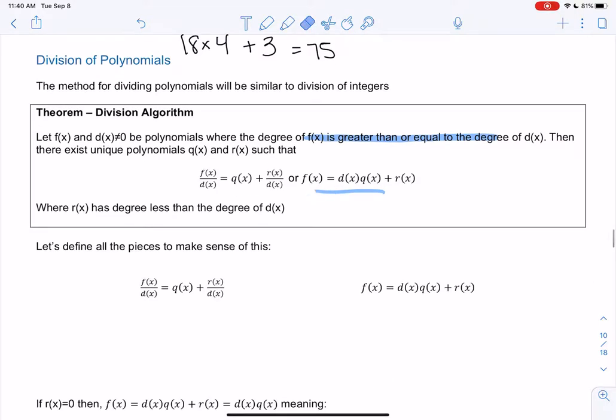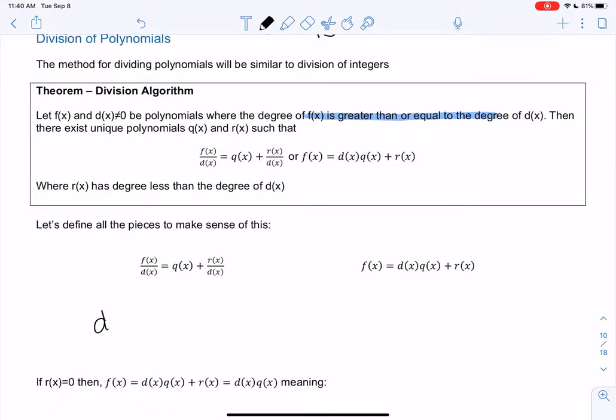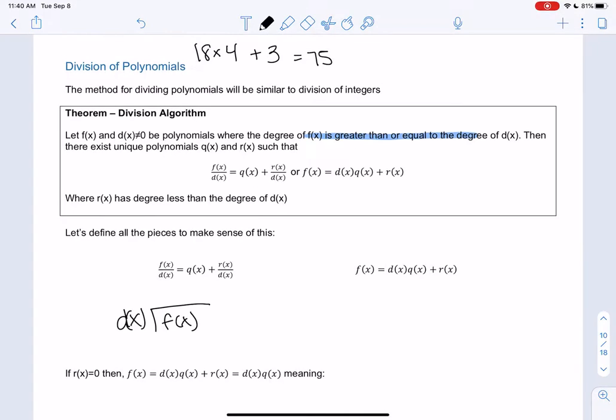So I'm going to write it out because it's overwhelming right now. So we're going to do f(x) divided by d(x), meaning we're going to do d(x) on the outside, f(x) on the inside for long division. q(x) will be our quotient, so that's what pops up on top. And r(x) is our remainder. And then just by multiplying everything by d(x), it goes away. We get q(x) times d(x), and then we get the remainder. So these will be two useful formulas in a second.